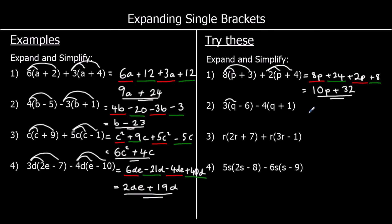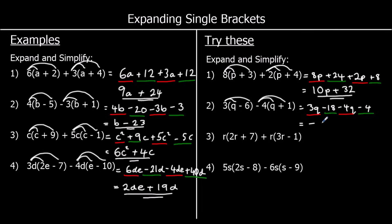For the second one: 3 times q is 3q, and 3 times a negative 6 is negative 18. Negative 4 times q is negative 4q, and negative 4 times positive 1 is negative 4. So 3q take away 4q: 3 take away 4 is negative 1, so we've got negative q. And negative 18 take away 4 is negative 22. So negative q minus 22.